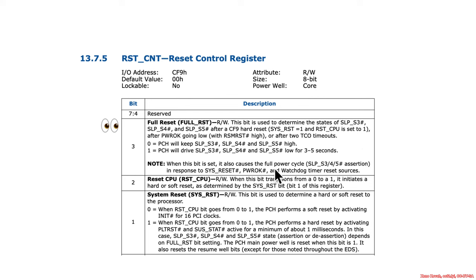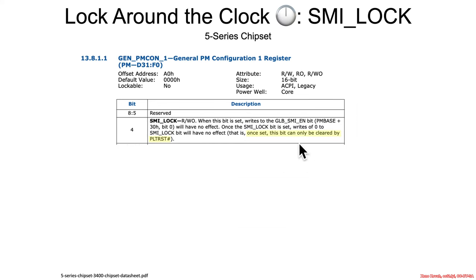Additionally, if that bit is set, there are other resets — sys reset, power okay, and watchdog timer resets — which will also bring down all of those signals to kill the power. There's one more lock we saw where the documentation explicitly states: once set, this bit can only be cleared by a platform reset — and that is SMI lock. SMI lock ensures you may not disable SMIs on the system; the global SMI enable stays set to 1 so SMIs are not suppressed. But SMI lock will be cleared if the system goes through a platform reset.